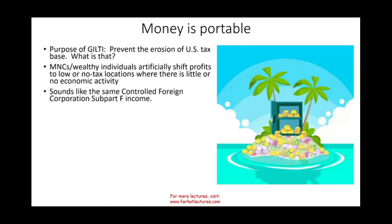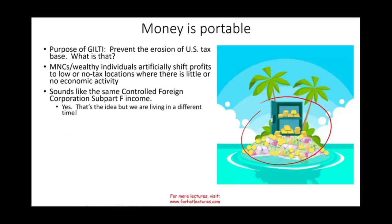When we talked about CFC, we said U.S. corporations, multinationals, and wealthy individuals were shifting their assets to places like the Cayman Islands and the Bahamas, where there is little or no economic activity but favorable tax treatment. The government already combats passive income — stocks, bonds, sales income, and service income — through the CFC subchapter F income rules. So if you shift your passive income overseas, it's included under subpart F income.